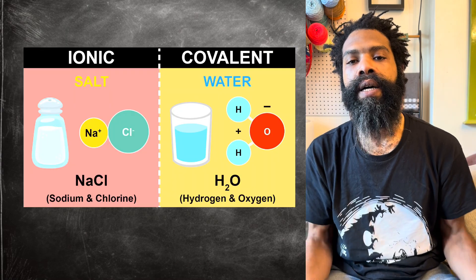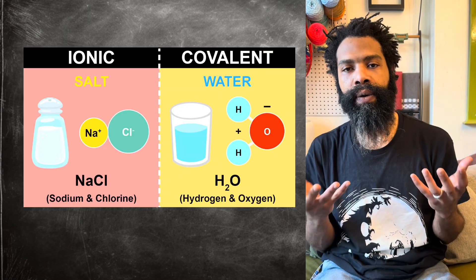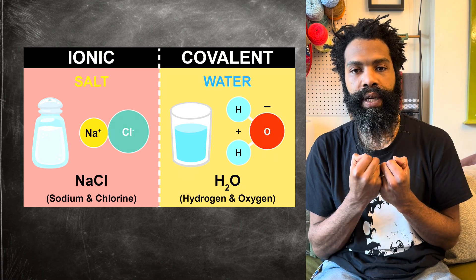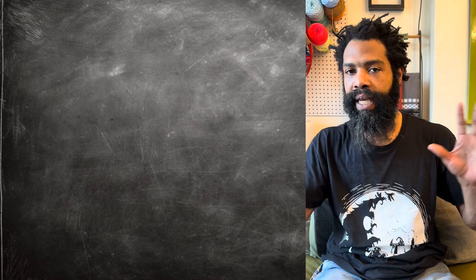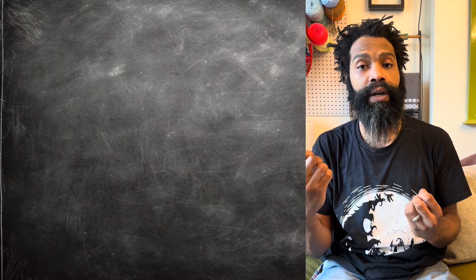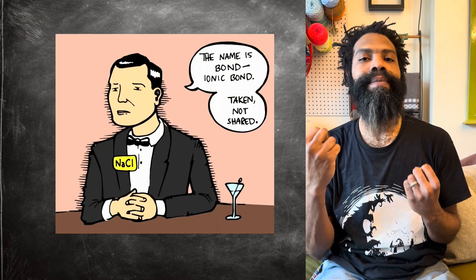So in short, a salt is a compound or a substance that has two parts that are ionically bound to each other. Those parts themselves can be a number of different things, but the important part about it being a salt is the part where you have an ionic bond happening.